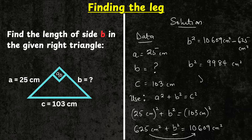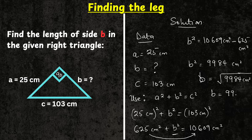Therefore B equals the square root of 9,984 centimeters squared. Evaluating this gives us approximately 99.92 centimeters. That's all for this video today. If you are new to this channel, please subscribe. That's the least way you could support me — like and share and let's spread the word. Take care, see you in the next video.